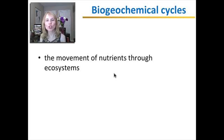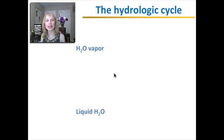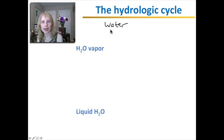Next, let's take a look at biogeochemical cycles, which is the movement of nutrients through ecosystems. The first one we'll look at is the hydrologic cycle, which is the same thing as saying the water cycle. So it's the movement of water through the environment. Water exists in the atmosphere as water vapor and on land and in bodies of water as liquid water. So how does it cycle between these two forms?